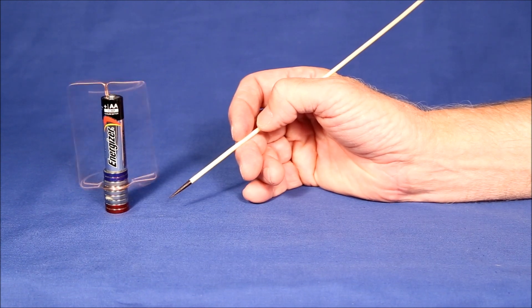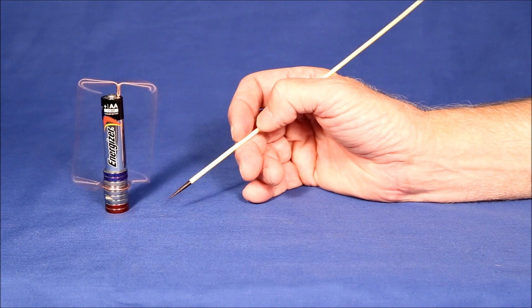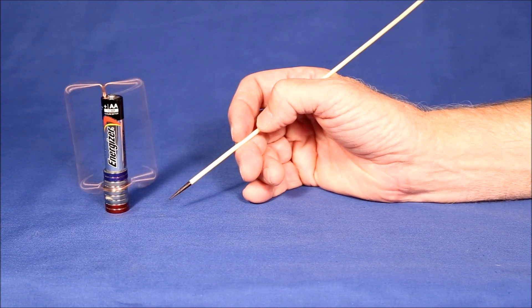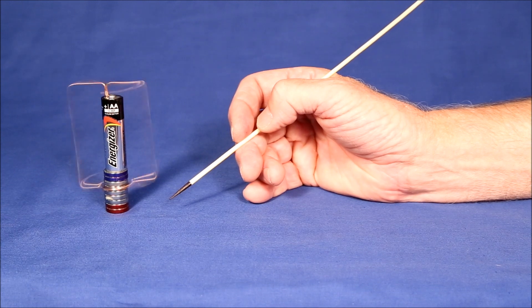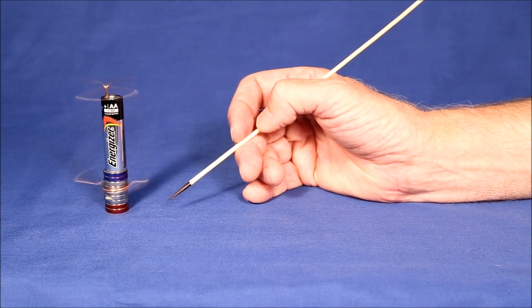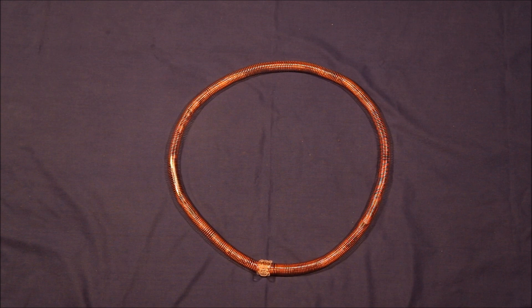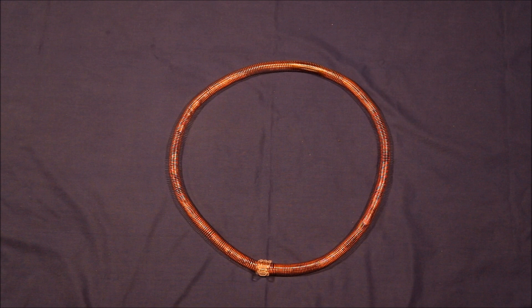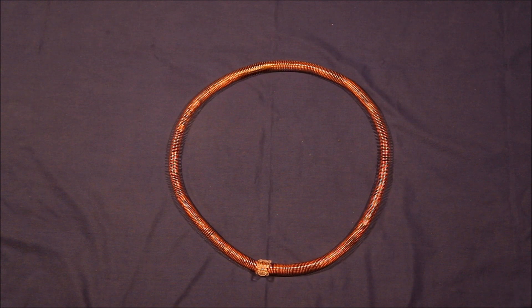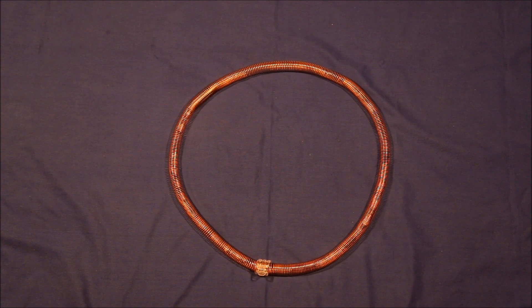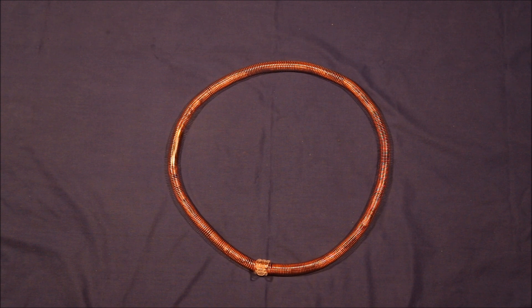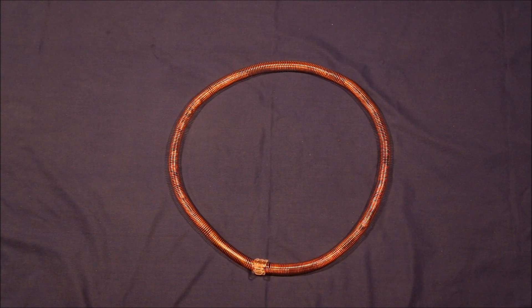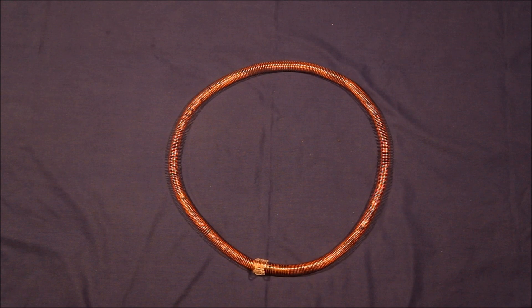The same principles can be used to explain how the bouncing homopolar motor and the electric train works, but they're a little easier to understand in terms of similar magnetic fields repelling each other. In most homopolar motors, the batteries and magnets are held steady while the wire rotates around them. In the homopolar train, the wire in the form of a tightly wound coil is fixed, and the battery and magnets move through it.